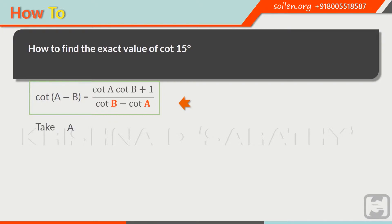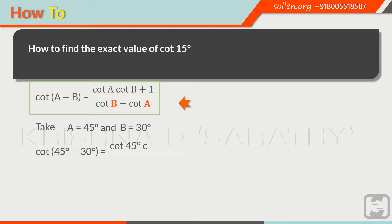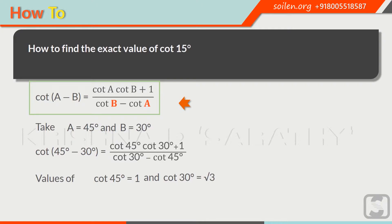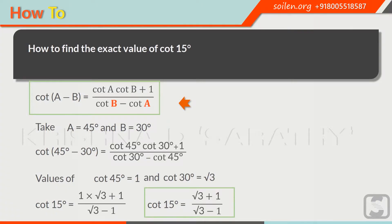Now we will take a equal to 45 degrees and b equal to 30 degrees. Alternatively, you can take 60 and 45 also. Place these in the above formula. Now we have: cotangent of 45 degrees minus 30 degrees equals cotangent 45 times cotangent 30 plus 1, over cotangent 30 minus cotangent 45. The value of cotangent 45 degrees is 1 and cotangent 30 degrees is the square root of 3. On the left side, 45 minus 30 equals 15 degrees, so the value of cotangent of 15 degrees equals the square root of 3 plus 1 over the square root of 3 minus 1. You can remember this and use it to solve questions faster.